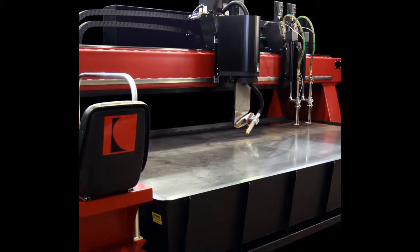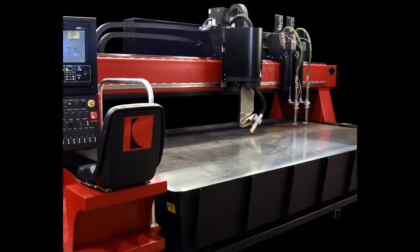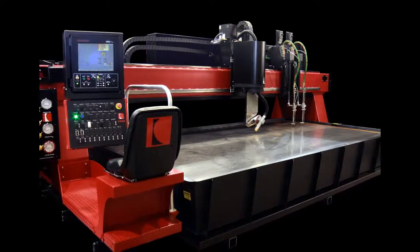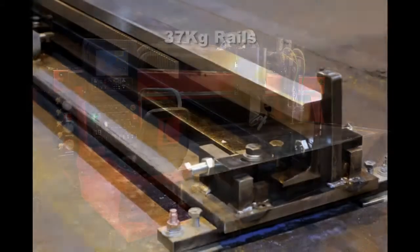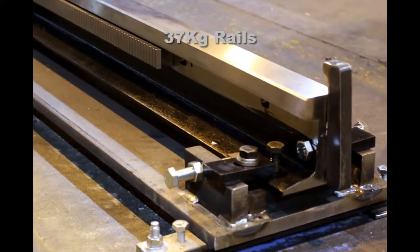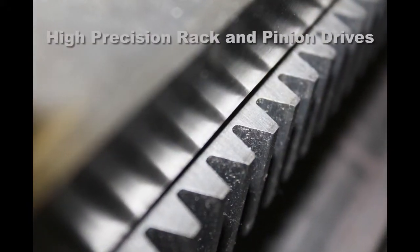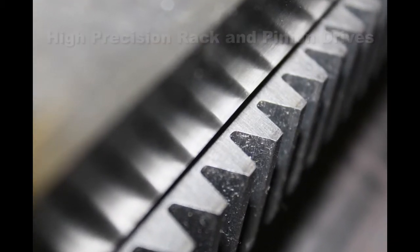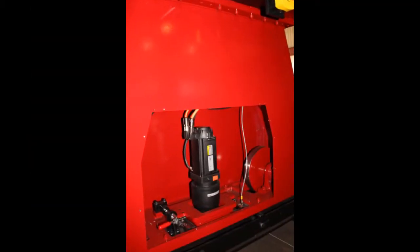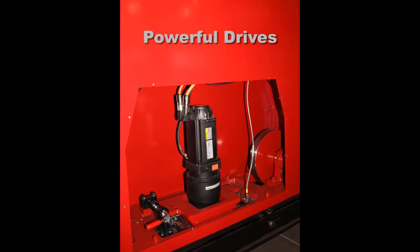The VersaGraphic Stream utilizes the latest technologies to provide our customers with advanced features and options that increase their productivity. Features such as large 37-kilogram triple machine rails provide extremely accurate and smooth machine motion, while large rack and pinion drives allow the VersaGraphic Stream to achieve speeds up to 1400 inches per minute.